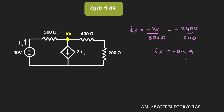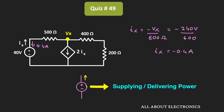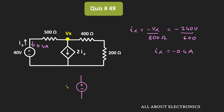Since the sign of this current is negative, it means that Ix is flowing in the reverse direction. That means for this 40 volt independent source, 0.4 ampere current is flowing into the positive terminal. For any independent or dependent voltage source, if the current is going away from the positive terminal, the source is supplying or delivering power. But if the current is flowing into the positive terminal, it is absorbing power. Since 0.4 ampere is entering the positive terminal, this 40 volt source is absorbing power.